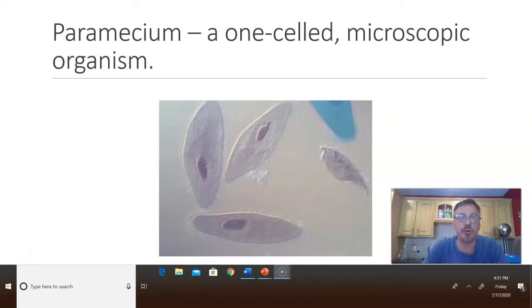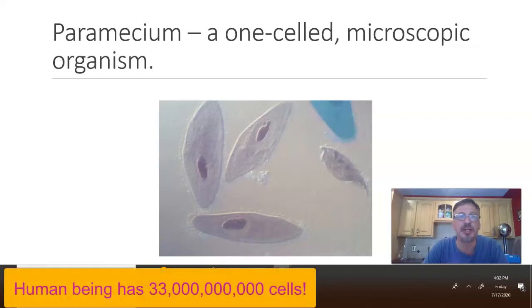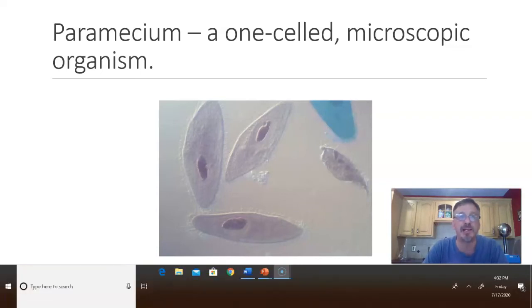The last organism I want to talk about is a paramecium. A paramecium is a one-celled microscopic organism. A human being has 33 trillion cells, and a paramecium has one cell. A paramecium is so small that you can't see it with the naked eye — you need to use a microscope.